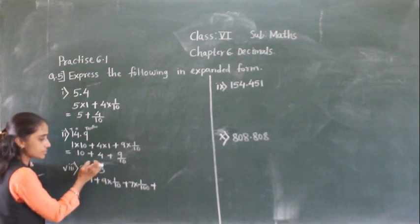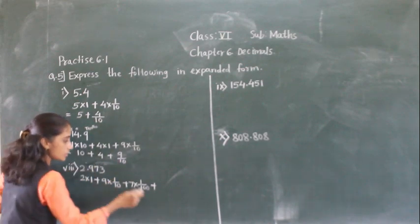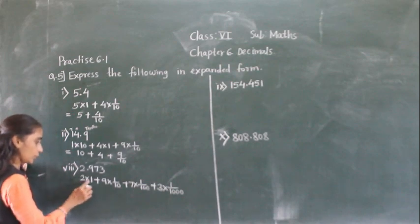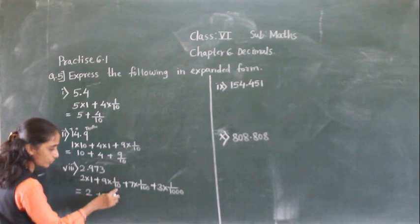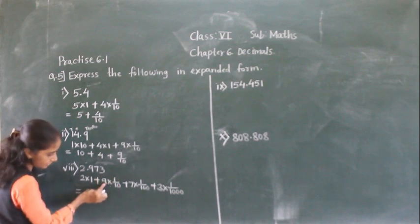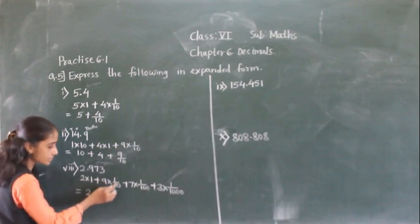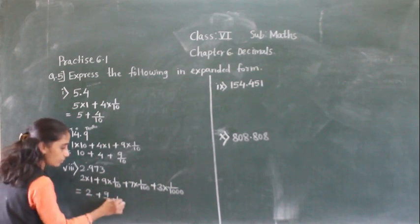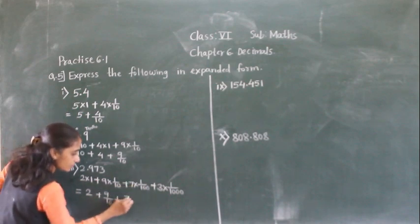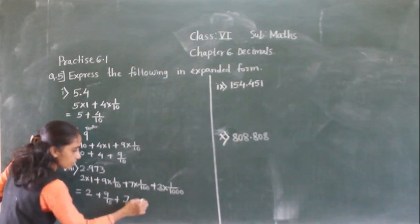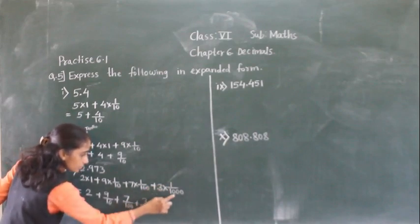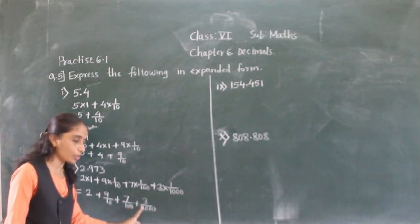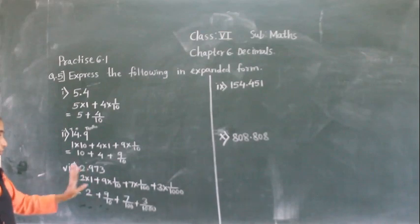Now 3 is at which place? 1000. So 3 multiplied by 1 upon 1000. So now: 2 into 1 plus 9 into 1 upon 10 — here there is no denominator, means 9 upon 10 — plus 7 into 1 upon 100, so 7 ones are 7 and 100 ones are 100, plus 3 ones are 3 and 1000 ones are 1000. So 2 plus 9 upon 10 plus 7 upon 100 plus 3 upon 1000. This is the expanded notation for the given number.